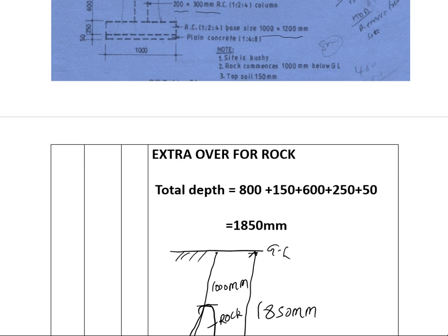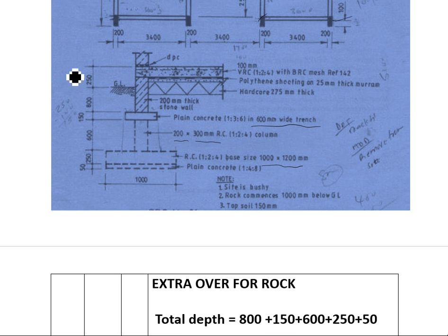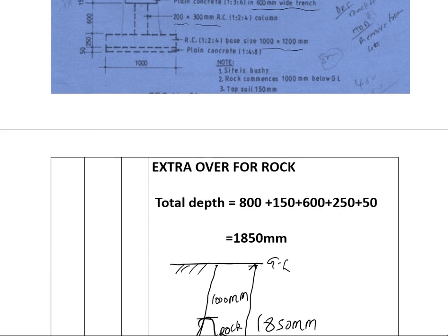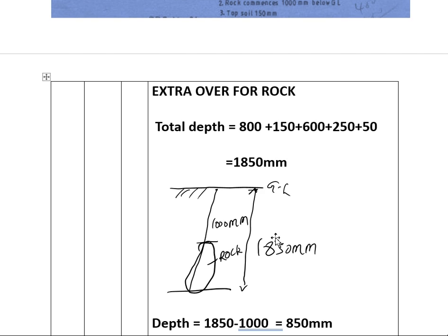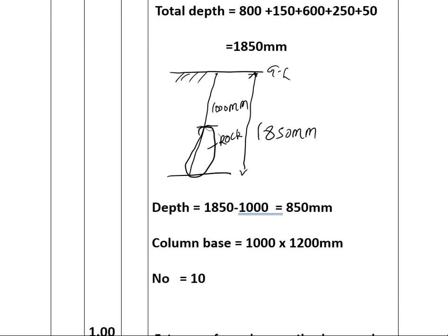We need to find the overall depth from top to bottom. From ground level: 800 plus 150 plus 600 plus 200 plus 50 gives us a total of 1850 millimeters. We've been told rock occurs at 1000 millimeters from the top, so the depth where rock is occurring is the overall depth minus 1000, which is 1850 minus 1000 — leaving us 850 millimeters.